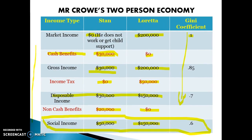This example shows why market income is the most inequitable — it is before any taxes or transfer of money, which is why the Gini coefficient is highest at that point.